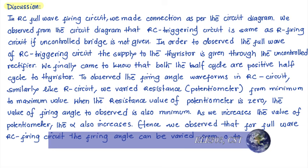In the RC full wave firing circuit, we make connections as per the circuit diagram. We observe from the circuit diagram that the RC triggering circuit is the same as the R firing circuit if the uncontrolled bridge is not given. In order to observe the full wave of the RC triggering circuit, the supply to the thyristor is given through the uncontrolled rectifier. Both half waves are positive half wave cycles to the thyristor. We vary the resistance — the potentiometer — from minimum to maximum. When the resistance value is zero, the firing angle is also minimum; as we increase the potentiometer value, the firing angle also increases. For the full wave RC firing circuit, we can vary the firing angle between zero to 180 degrees.